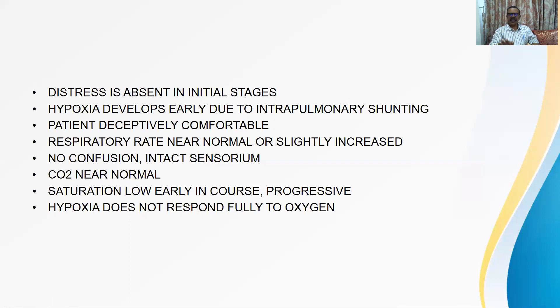Patient is not distressed. He is only hypoxic and there is no saturation monitoring. He spends long time in quarantine centers at home. And patient is pretty comfortable actually. Respiratory rate is near normal or only slightly increased because there is no complete collapse of alveolus, partial collapse of alveolus. Some pneumocytes are functioning. No confusion, intact sensorium. Carbon dioxide near normal. Saturation low early in course and progressive. The saturation is low and keeps on dropping, keeps on dropping as the disease progresses. Even if you give oxygen, it does not respond fully to oxygen.